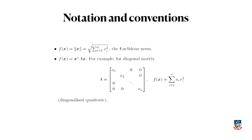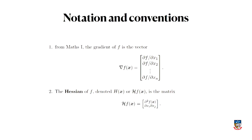There's a trick we'll use very regularly: the quadratic form of a vector. The equivalent of ax² for vectors is x-transpose times A times x. If x is a column vector, then x-transpose is a row vector, and x-transpose A x is a scalar. If A is a diagonal matrix, then x-transpose A x looks like the sum of aᵢxᵢ². We'll also talk a lot about gradients and write the Hessian — the matrix of mixed partial derivatives — with a script H.